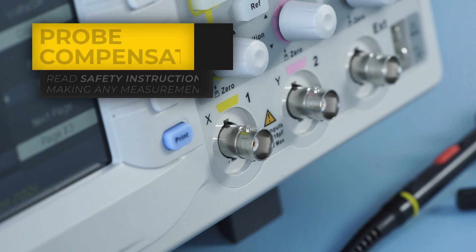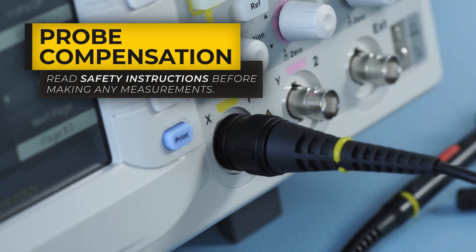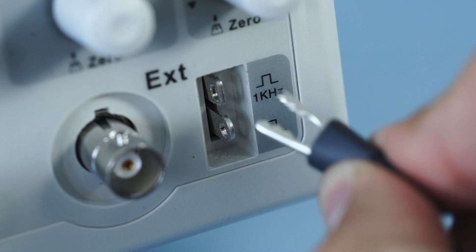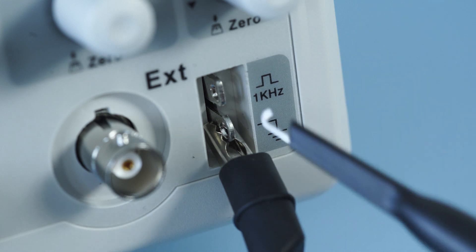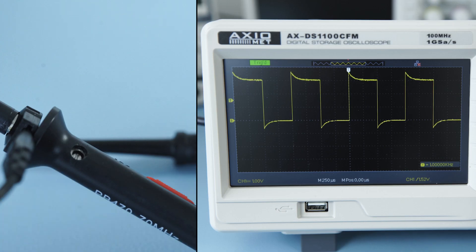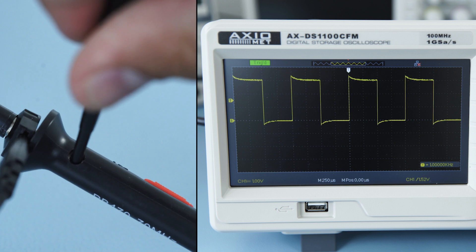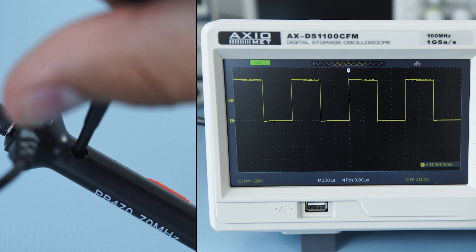To make sure your measurements are precise, check if the probes are properly compensated. To do that, connect the probe to the compensation terminal at the front panel and use the non-metallic driver so the signal is as close to a perfectly compensated signal as possible.